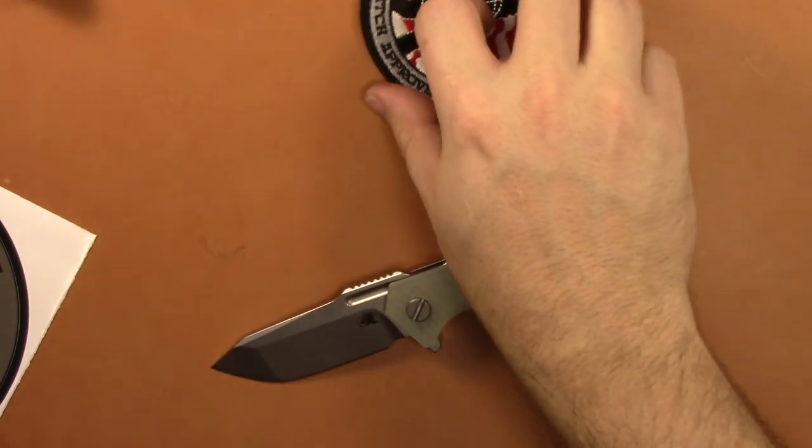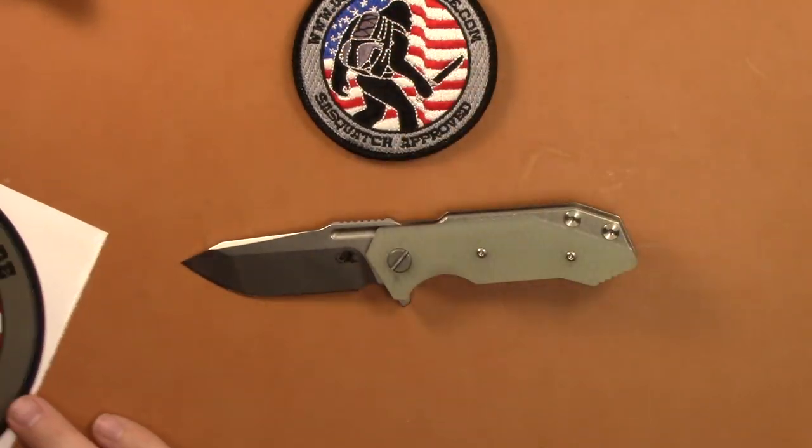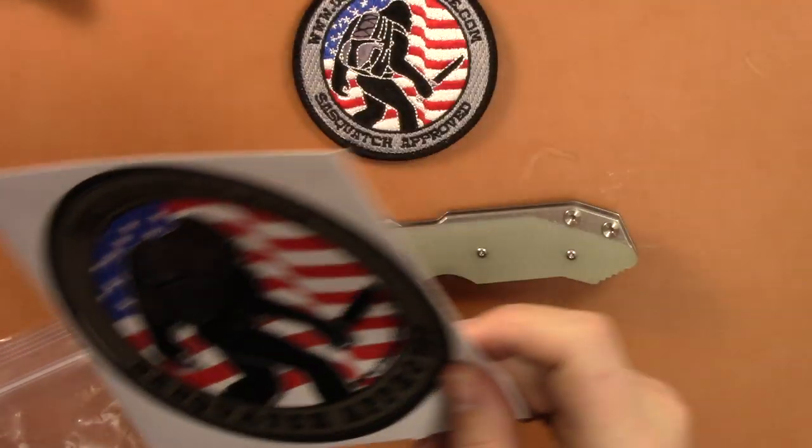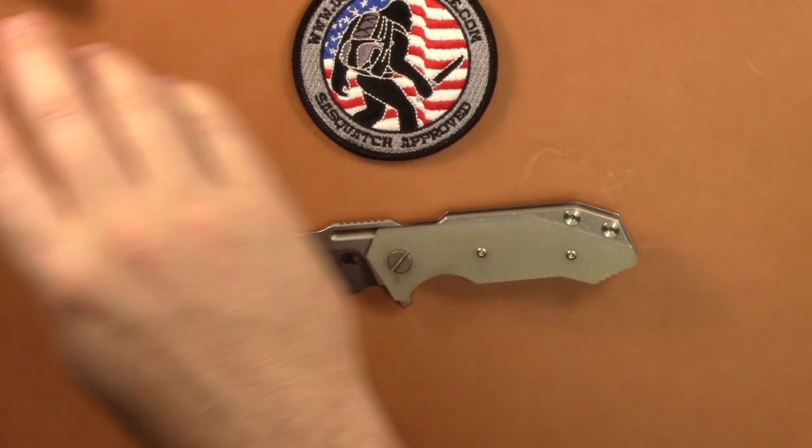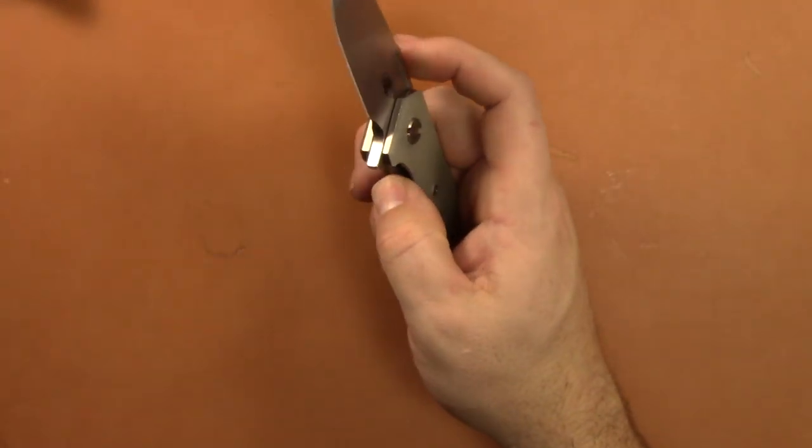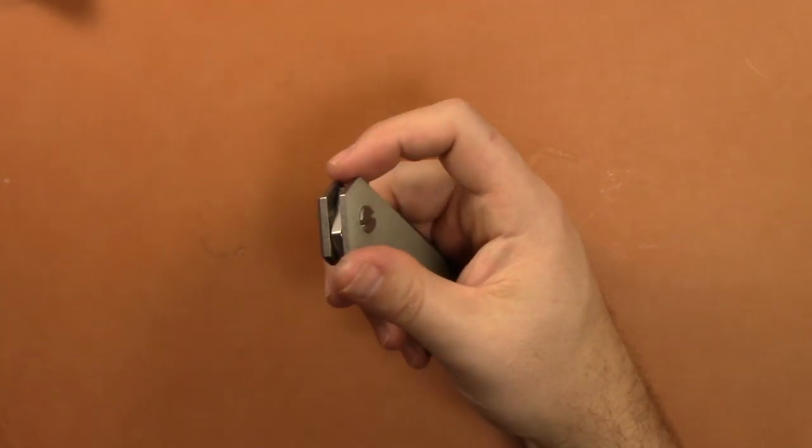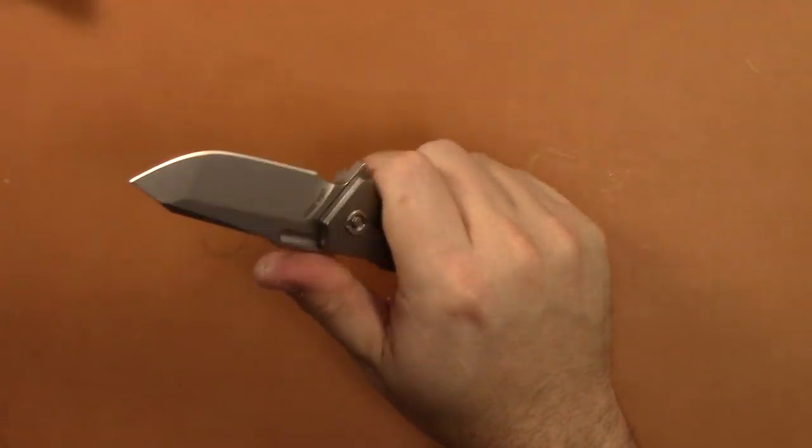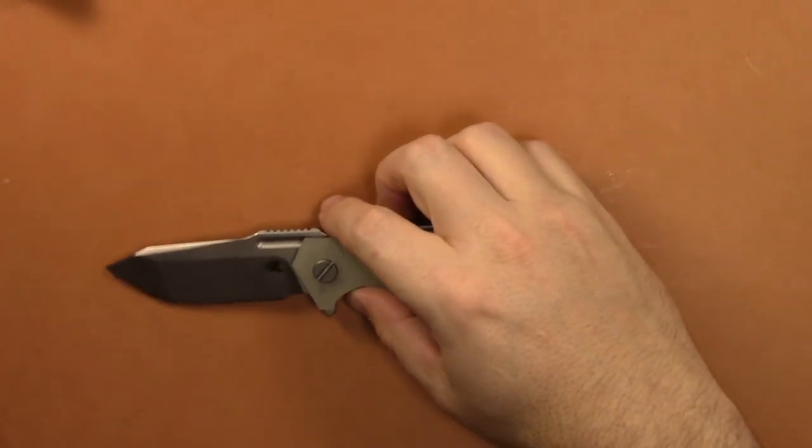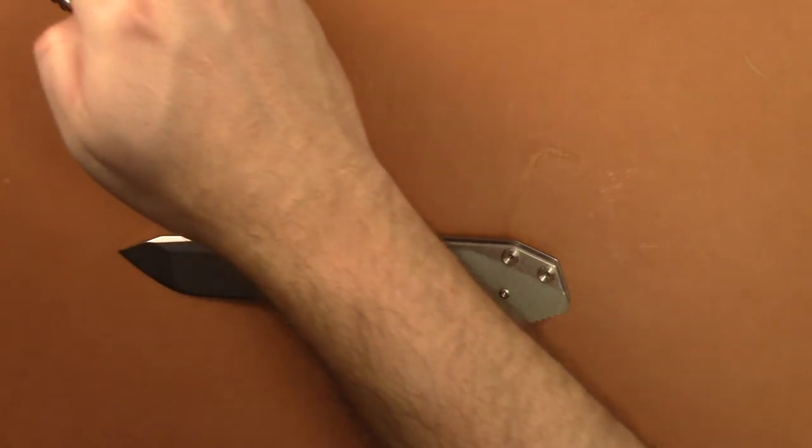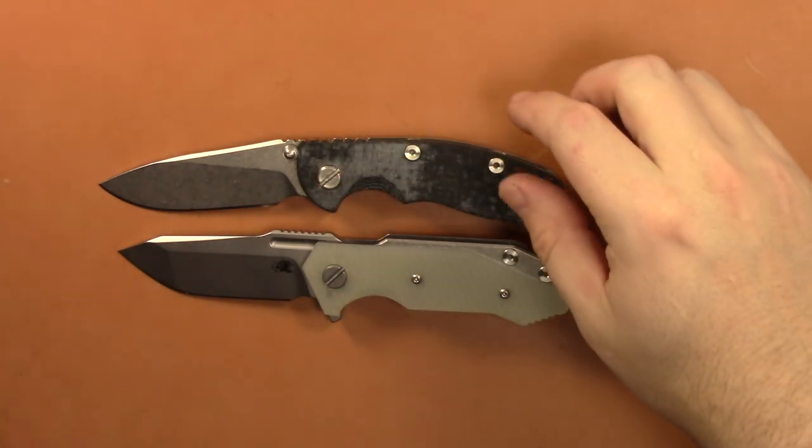Very cool knife. I've been waiting for the Half Track to come out in tri-way. Tri-way is where it's at. Love my 3.5 XM-18 and the skinny, this guy here, which is my new favorite EDC knife. It doesn't have the tri-way but it is a non-flipper three inch, which are pretty rare.